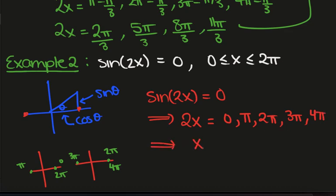We then divide by 2, so x equals 0, pi on 2, pi, 3 pi on 2 and 2 pi.